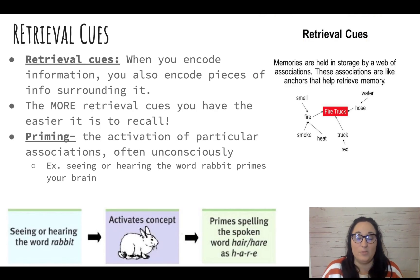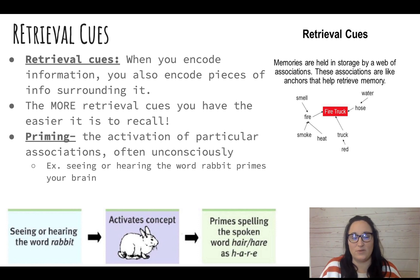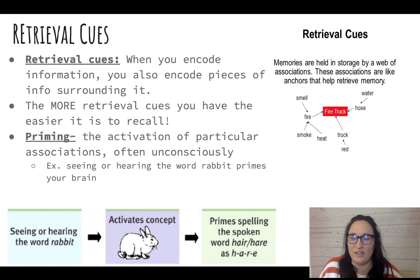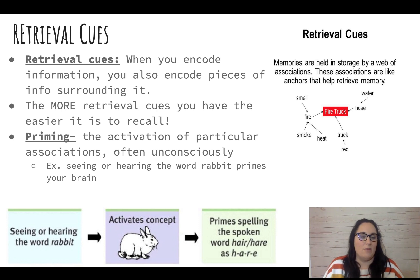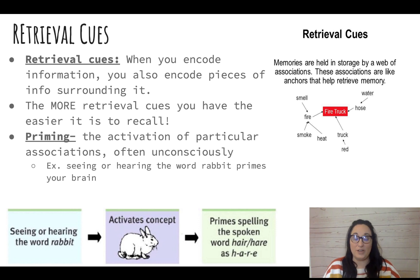Retrieval cues are super helpful, and you want as many as possible when you really want to remember something. When you encode information, you also encode various pieces of surrounding info. For example, reading a textbook, you might recall where you were, a picture on the page, what you were eating, or a story the teacher told. The more retrieval cues you have, the easier it is to recall the information.